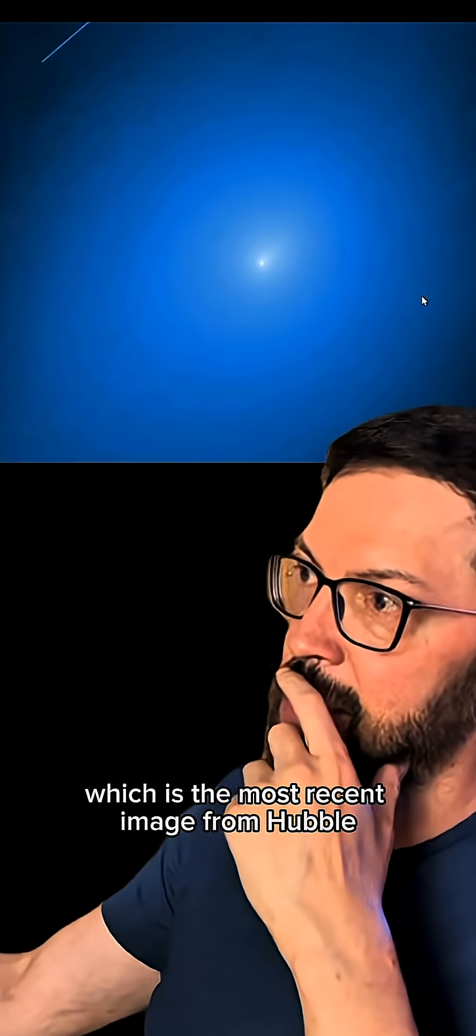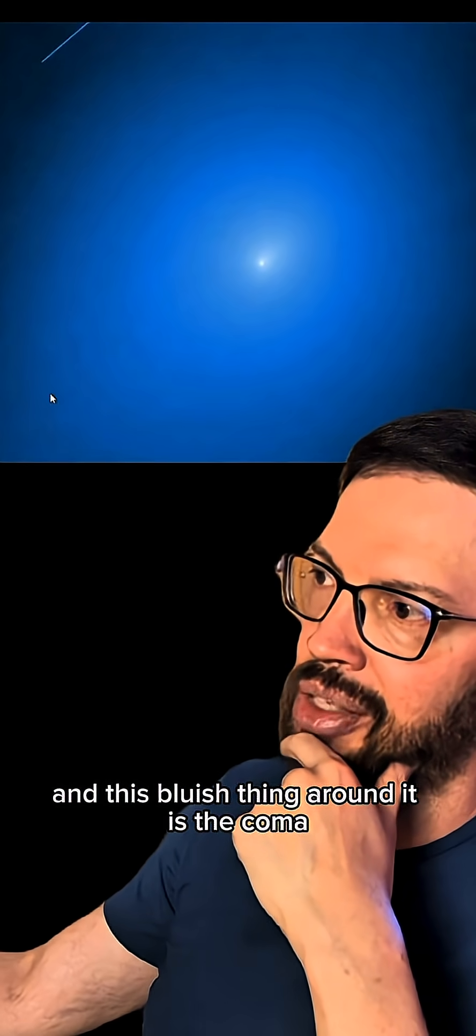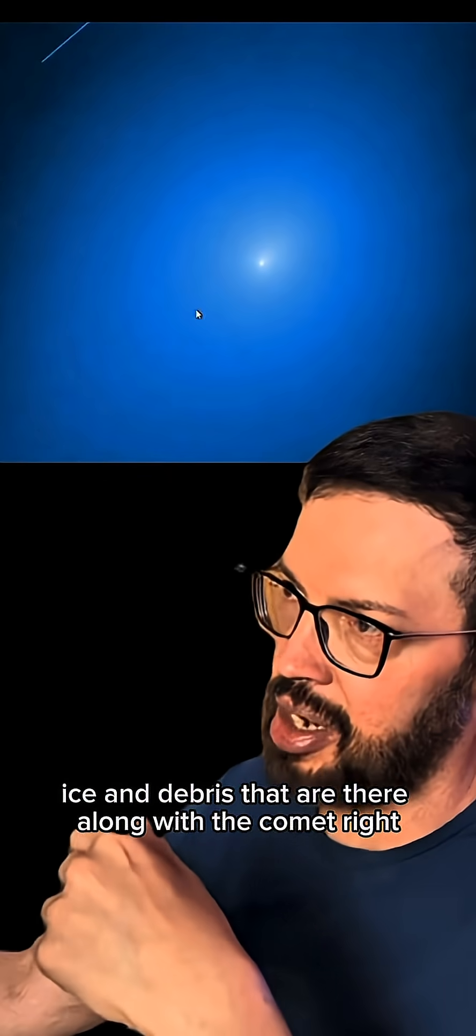Now, explaining this image here, which is the most recent image from Hubble, we have here the nucleus 13 Atlas. And this bluish thing around it is the coma. It's a cloud of gases, ice, and debris that are there along with the comet.